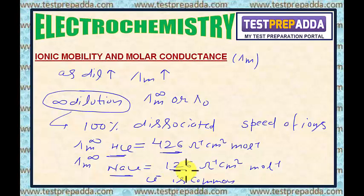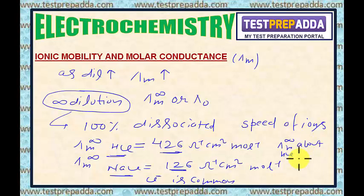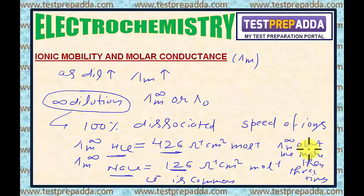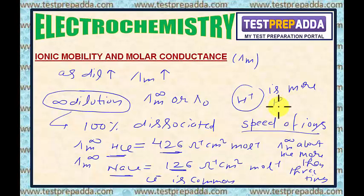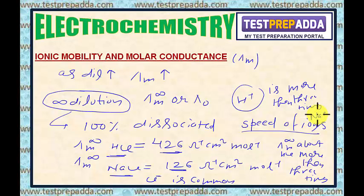The difference will be decided by H⁺ and Na⁺. Lambda M at infinite dilution for HCl is more than 3 times the value of NaCl. This difference is explained by the speed of ions — the speed of H⁺ ions is more than 3 times the speed of Na⁺ ions.